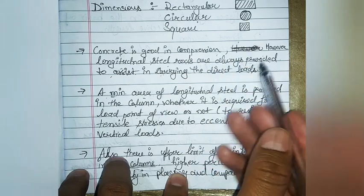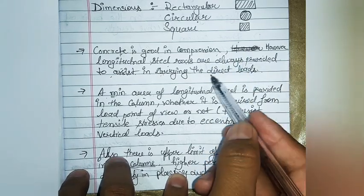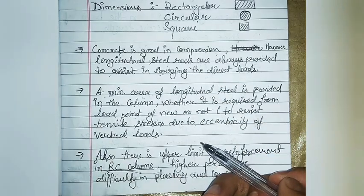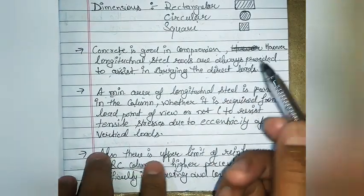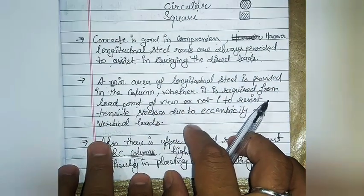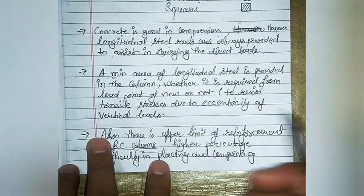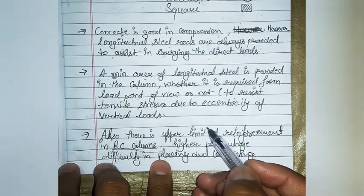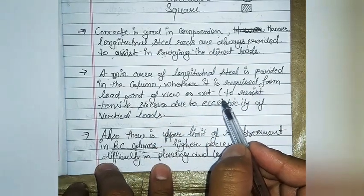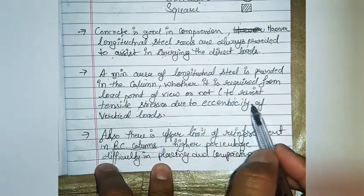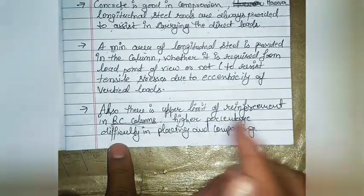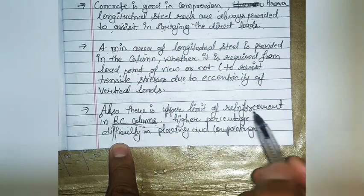When eccentric loading occurs, there may be bending moment in the column, which can cause generation of tensile stresses. We need to provide a minimum area of longitudinal steel in the column — whether or not it is required from a load point of view — to resist tensile stresses due to eccentricity of vertical loads. There is also an upper limit of reinforcement in reinforced columns.